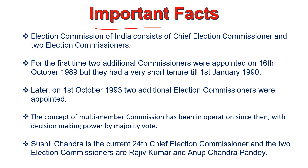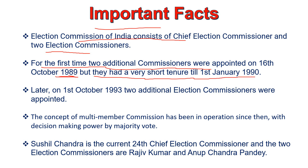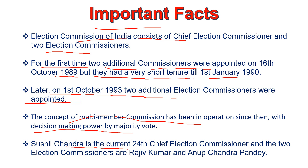The Election Commission of India consists of the Chief Election Commissioner and two Election Commissioners. For the first time, two additional commissioners were appointed on 16th October 1989, but they had a very short tenure until 1st January 1990. Later, on 1st October 1993, two additional Election Commissioners were appointed, and the concept of a multi-member commission has been in operation since then with decision-making by majority vote. Susil Chandra is the current 24th Chief Election Commissioner, and the two Election Commissioners are Rajiv Kumar and Anup Chandra Pandey.